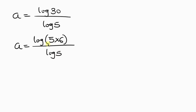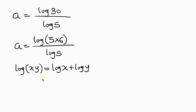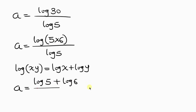Our next step will be to apply the property of logarithm that says log(x times y) is the same as log x plus log y. So we're going to apply this property to what we have on the numerator. So a equals log 5 plus log 6, all over the denominator log 5.